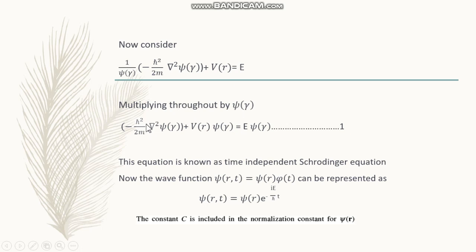Now the whole equation is multiplied by psi of r. The equation can be modified like this, and this equation is known as the time independent Schrödinger equation.